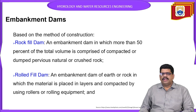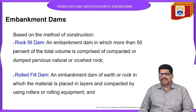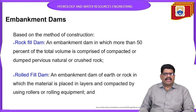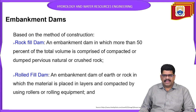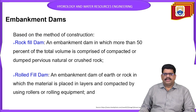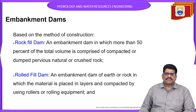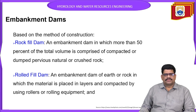The second type is the rolled-fill dam. In a rolled-fill dam, the embankment material is placed in layers and compacted by rollers or rolling equipment. So we call it a roll type of dam. These are the two types based on construction of earthen embankment dams.